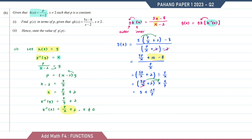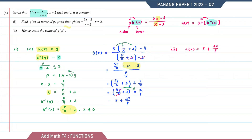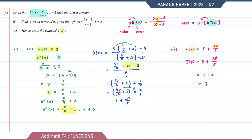Question number 2, find the value of g(p). For this question, p is the input. So g(p) equals 5 plus 2p over p. The p simplifies, giving 5 plus 2, therefore g(p) is equal to 7.